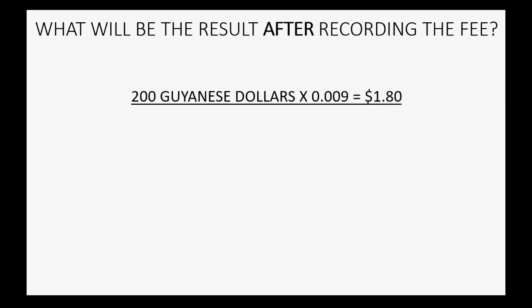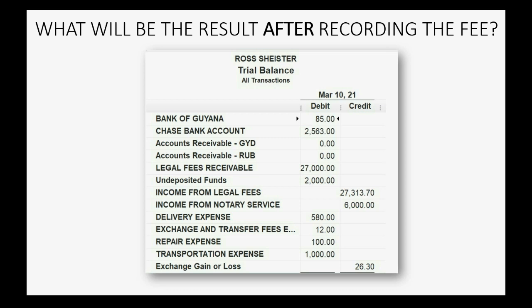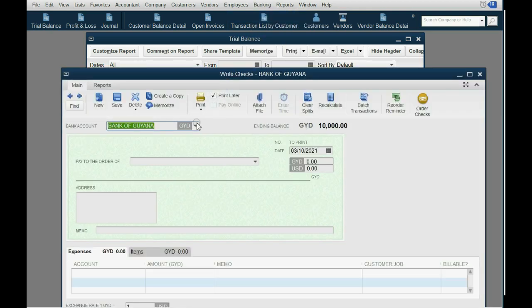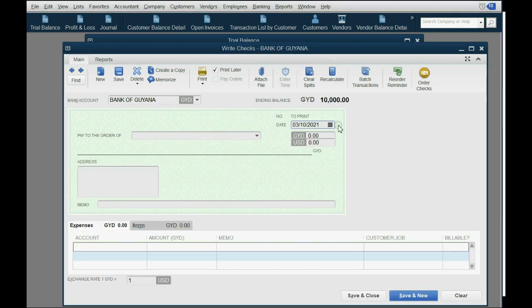Now let's record the fee. 200 Guyanese dollars equals $1.80 at the moment of the transfer. The Bank of Guiana is where they took the fee from, so it will decrease by $1.80 and become $83.20. Exchange and transfer fees will increase by $1.80 and become $13.80. On the same date, click Banking > Write a Check, taking the money from the Bank of Guiana on March 10th.